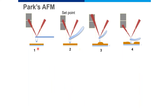Let's understand the mechanism to generate an image. First, the laser is aligned into the photodiode exactly at its center, with no tip-sample interaction — the tip is in air. Then we slowly land the tip on the sample. The moment the tip lands, the cantilever bends, and the laser spot deviates slightly in the vertical direction from center. This deviation value is what we call the set point.